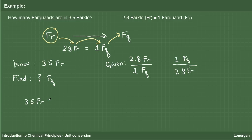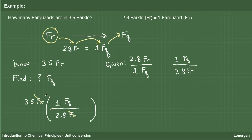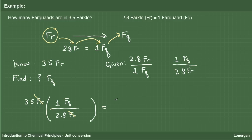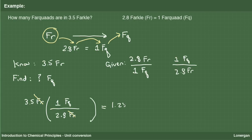We are asked to find how many farquad. We start with the quantity we know, 3.5 farquad. One of our two conversion factors will convert this in one step to farquad. As can be seen, if we multiply by 1 farquad over 2.8 farquad, the units of farquad will cancel and we are left with the desired unit of farquad. If we were to have used the other conversion factor, we would not have gotten the proper units. Plugging into our calculator and rounding to two significant figures then yields our answer of 1.3 farquad.